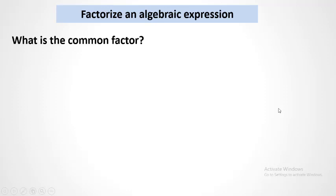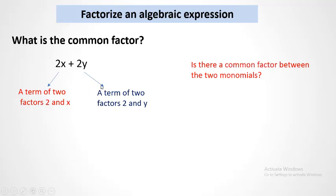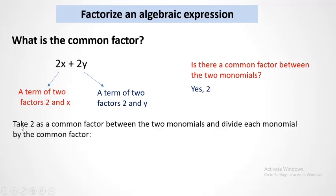Now, factorize an algebraic expression. What is a common factor? If we have two terms, 2x plus 2y: the first term consists of factors 2 and x, and the second consists of factors 2 and y. There is a common factor between the two monomials — both have 2. Take 2 as a common factor and divide each monomial by it.